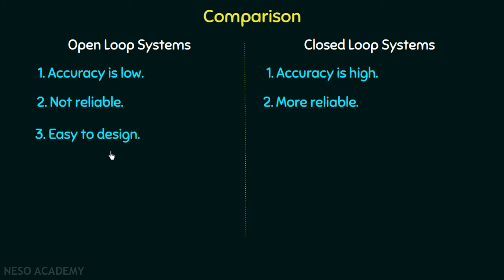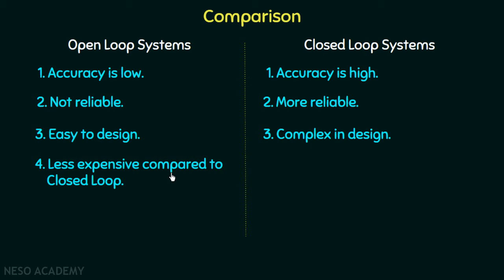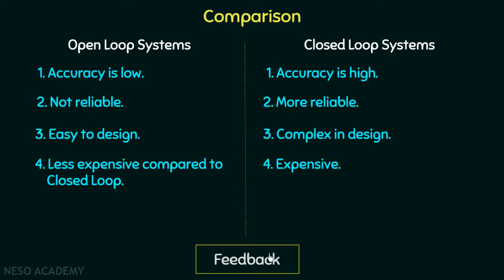Open loop systems are easy to design because there is no feedback factor involved and the circuitry is simple. Closed loop systems are complex in design because an additional feedback factor is involved and the circuitry is complex. Due to all these reasons, open loop systems are less expensive compared to closed loop systems, which are expensive. The distinguishing factor between the two is feedback, which is present in closed loop systems and absent in open loop systems.